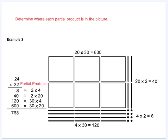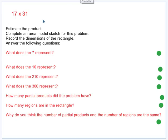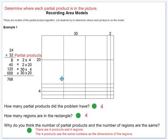Let's look at the problem 17 times 31. First, you need to estimate the product, which I would probably do 30 times 20, so it's probably going to need to be around 600, maybe a little bit less. And then complete your area model sketch for this problem, record the dimensions of the rectangle, and then answer the following questions.